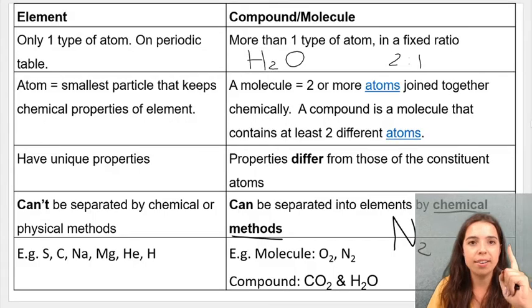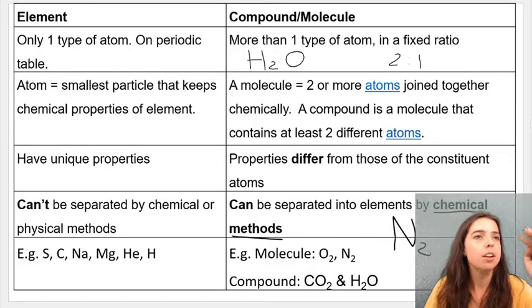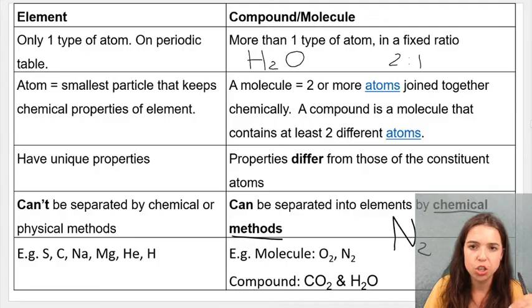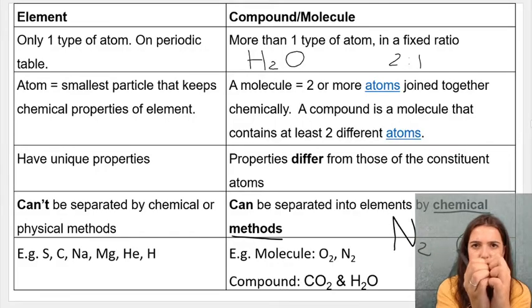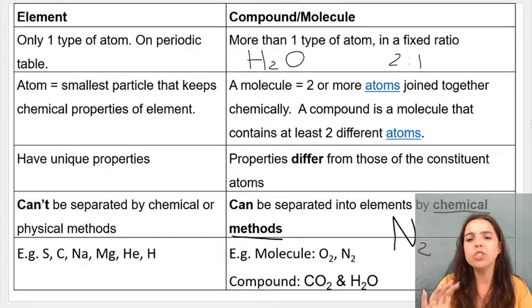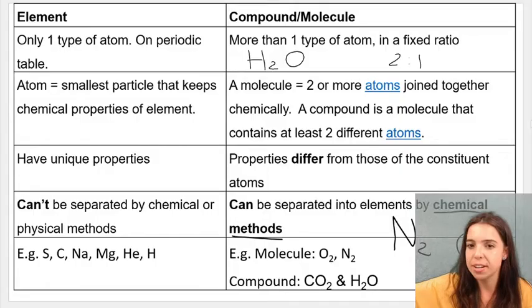Do you guys see that it consists of one type of element? So nitrogen gas, oxygen gas, chlorine gas, it's N2, so two nitrogens bonded together, two oxygens, so same element but bonded together. Compounds are generally when we have two or more different elements.